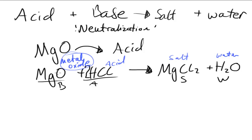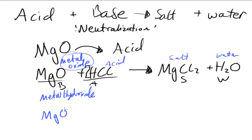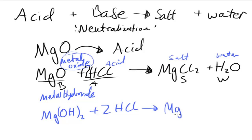Now if we use HCl again but instead use a metal hydroxide as the base: metal hydroxide such as Mg(OH)₂ — since magnesium is group 2, we need Mg(OH)₂. If we react this with 2 HCl, it acts as a base again and produces MgCl₂.